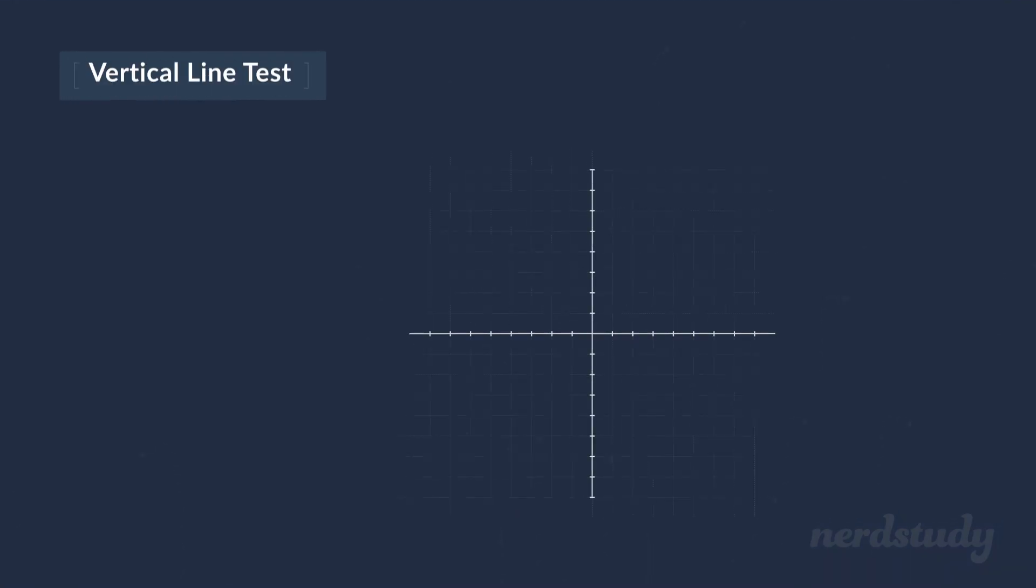So if we take a look at the graph for this equation and draw a perfectly vertical line down at any part of the graph, we should not be hitting two points ever. If this graph is a function, that is. But since our vertical line is hitting two points in this example, we confirm the fact that this equation is not a function.